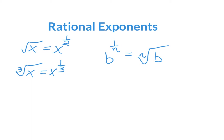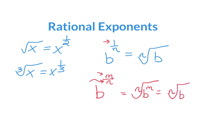To go slightly more in depth: if I have b to the power of m over n, the denominator is still my root, so that would be the nth root of b to the power of m, which is the same thing as the nth root of b, raised to the power of m.